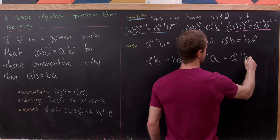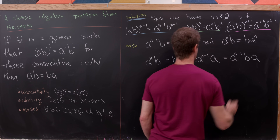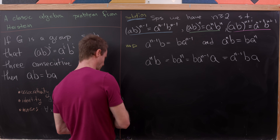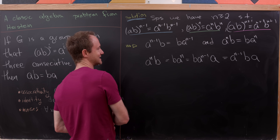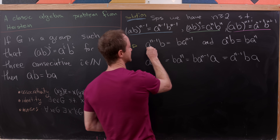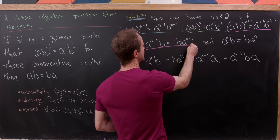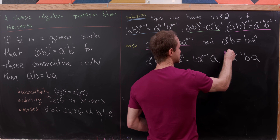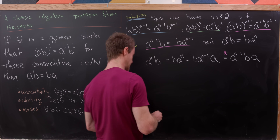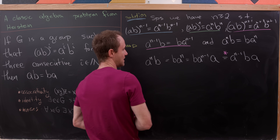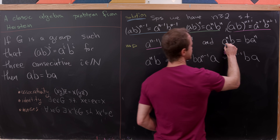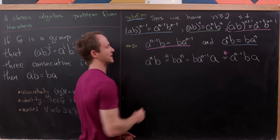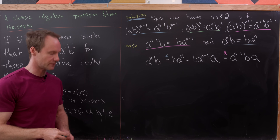I'm going to take B A^n and write it on one hand as A^n B using our second boxed rule. But I'll also write it as B times A^(n-1) times A, since A^(n-1) · A = A^n. Then applying our first boxed rule to the B A^(n-1) part, I can write that as A^(n-1) B times A. So the first rule was used for one equality and the second rule for the other.